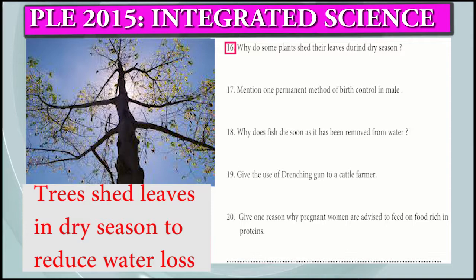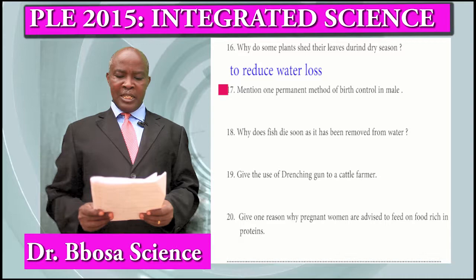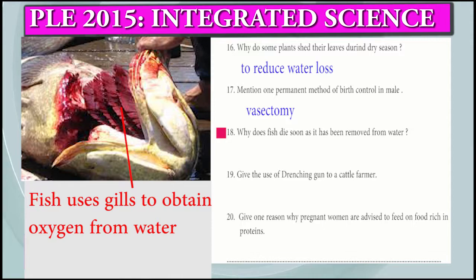Question 16: Why do plants shed their leaves during the dry season? To reduce water loss. Question 17: Mention one permanent method of birth control in the male. Vasectomy.